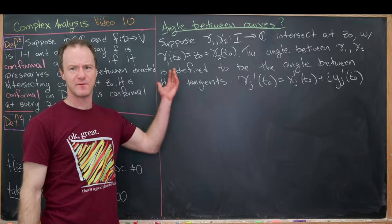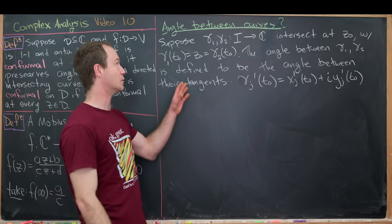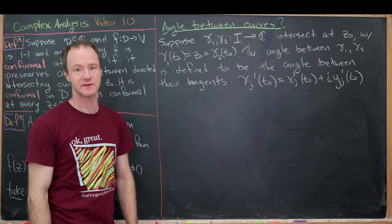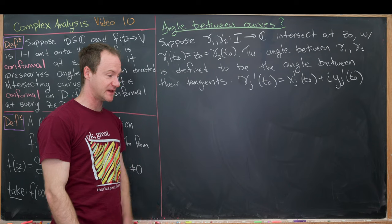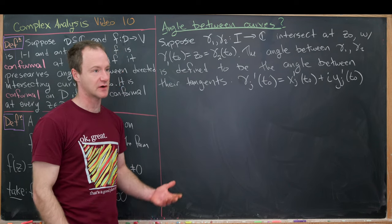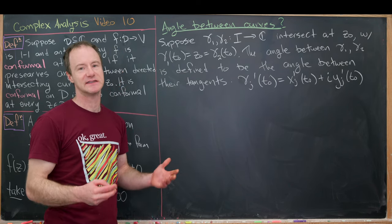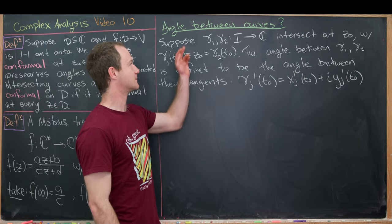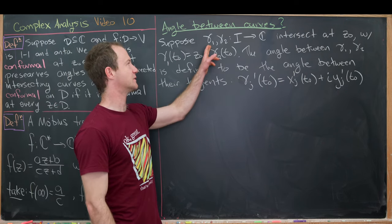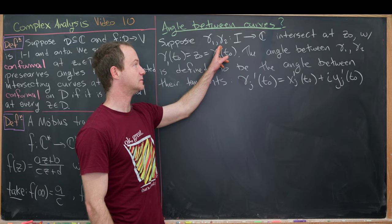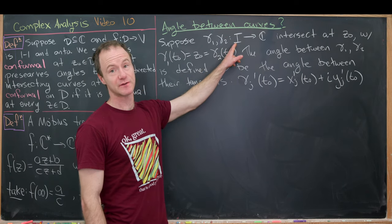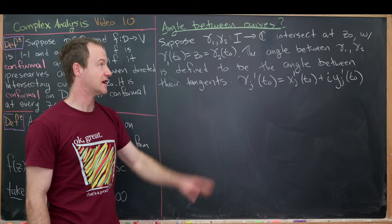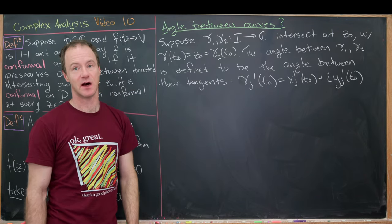We really have the following question to start off with: what does it mean to have the angle between two curves? In short, we can define the angle between two curves at an intersecting point as the angle between the two tangent vectors. Suppose γ₁ and γ₂ are functions from an interval I of real numbers into the complex numbers, and they intersect at z₀.